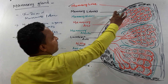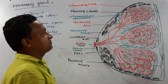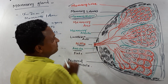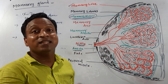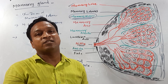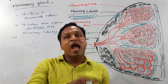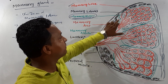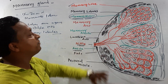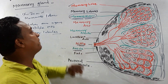These mammary lobules contain the secretory units — that is, they are made up of mammary alveoli. These are small grape-like structures. Mammary alveoli are responsible for production of milk, so they are called the structural and functional unit of the mammary gland.